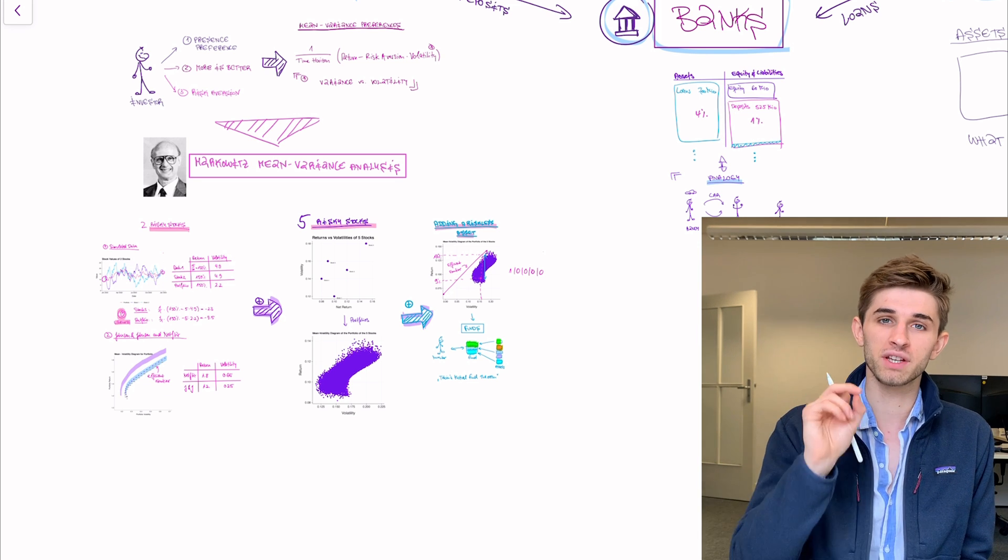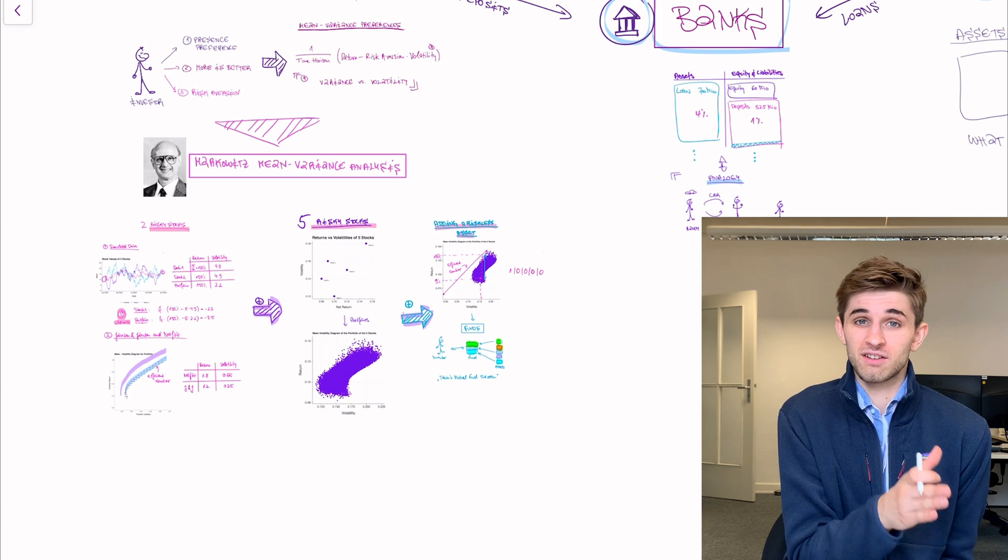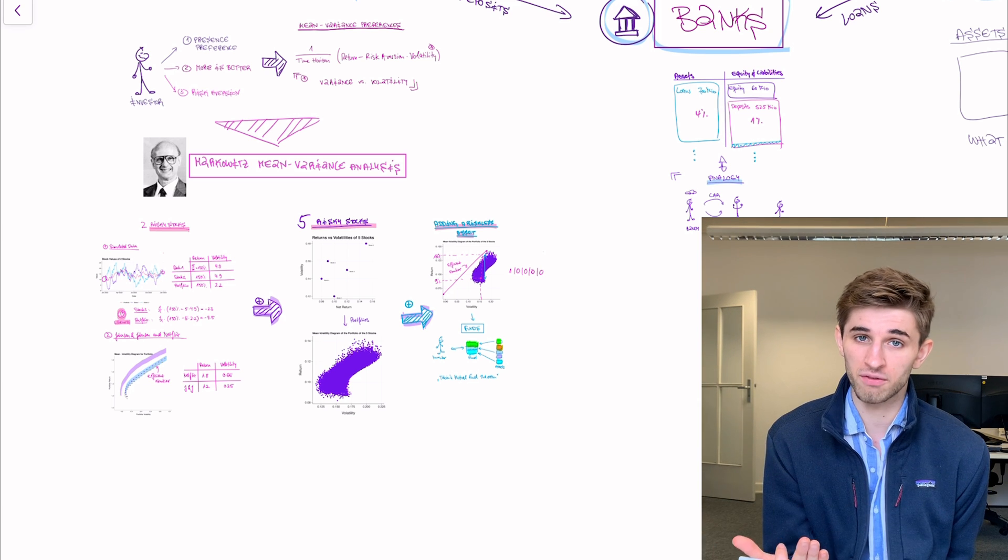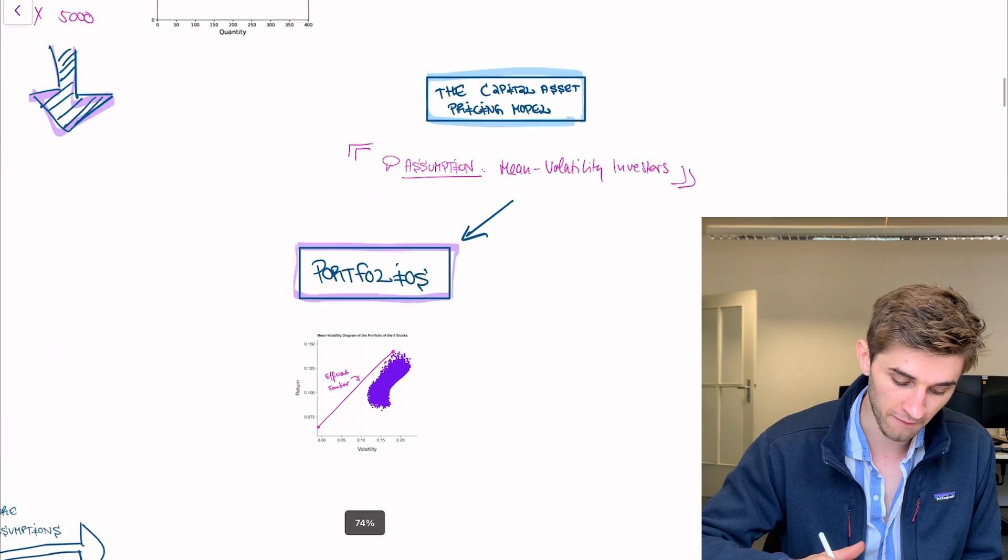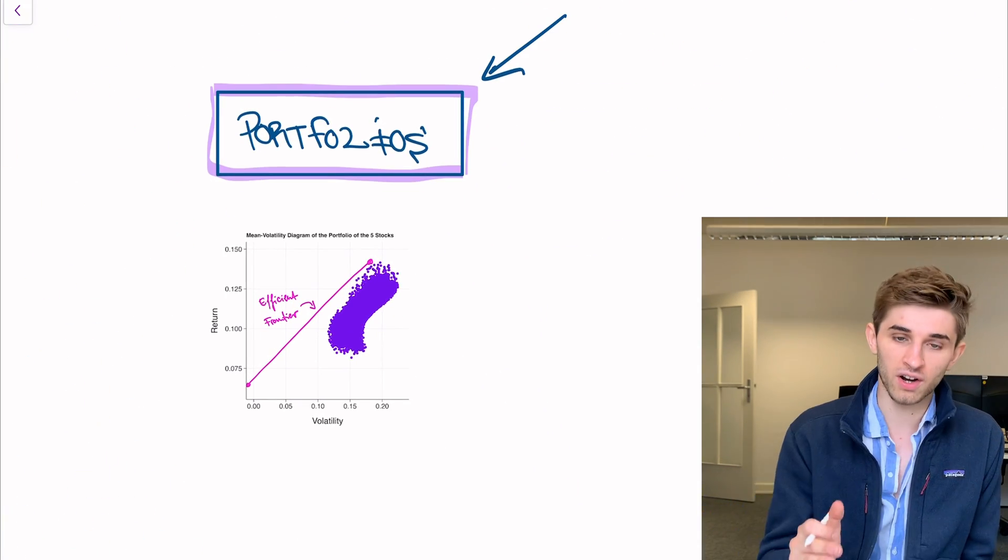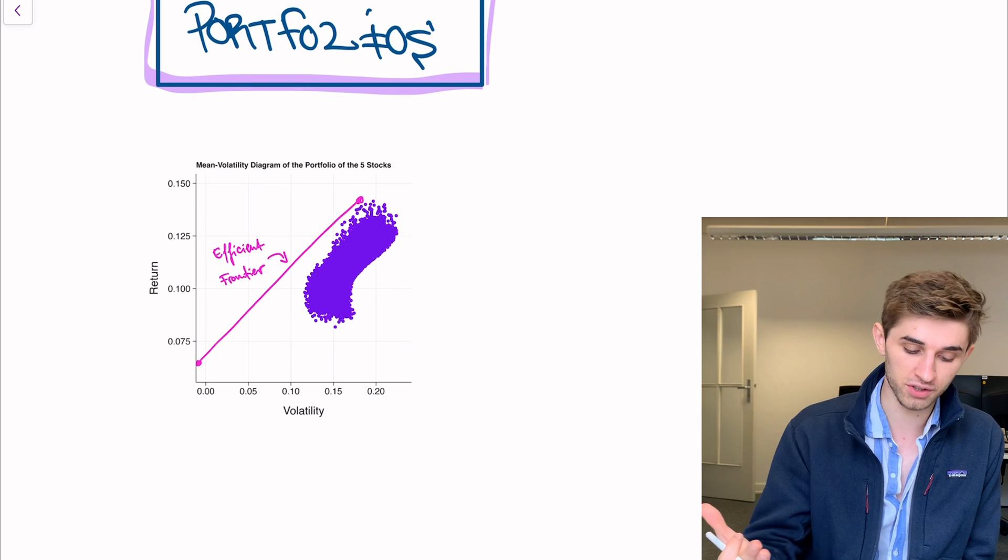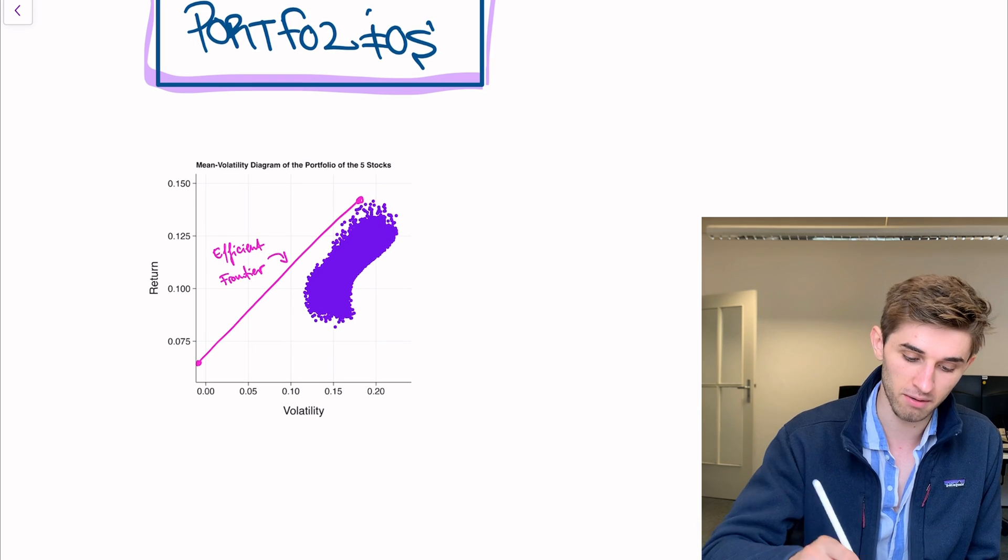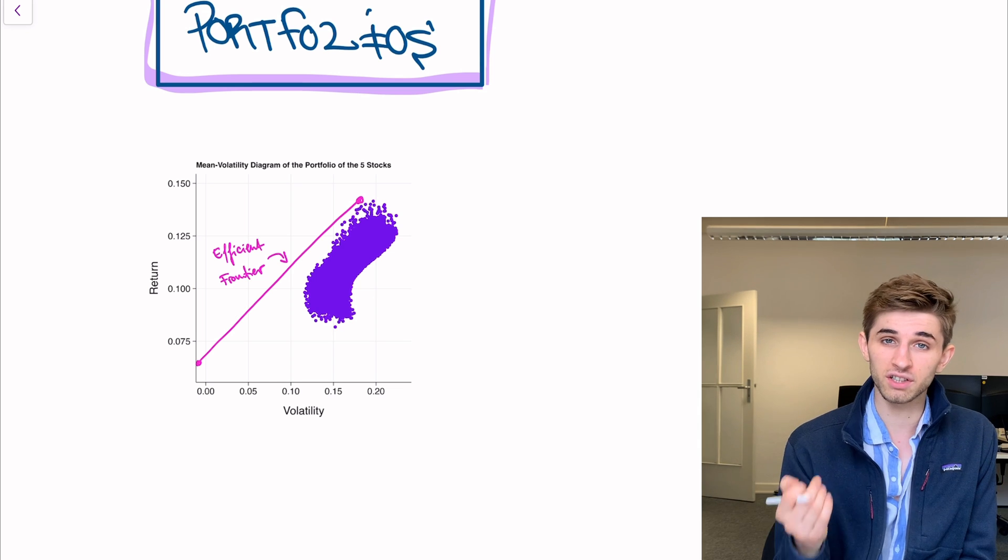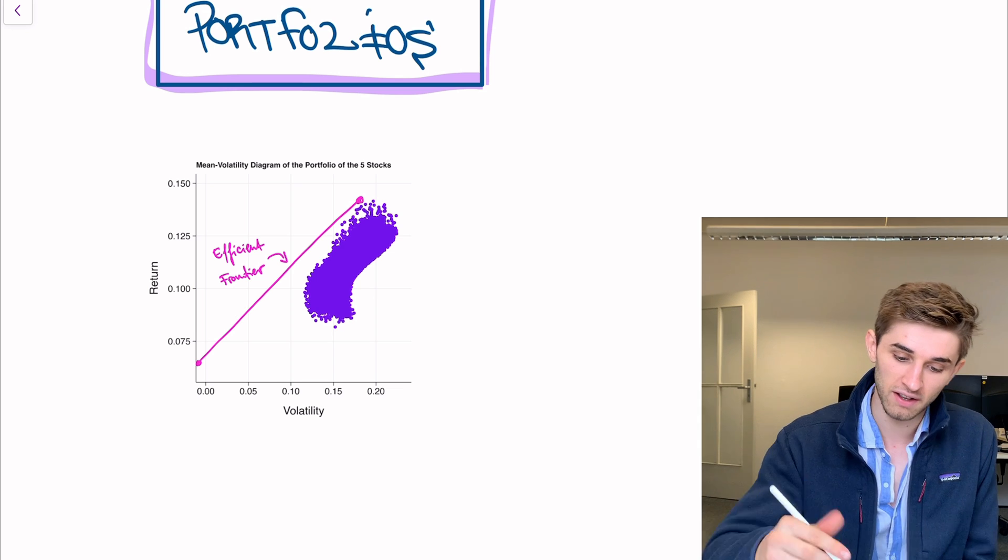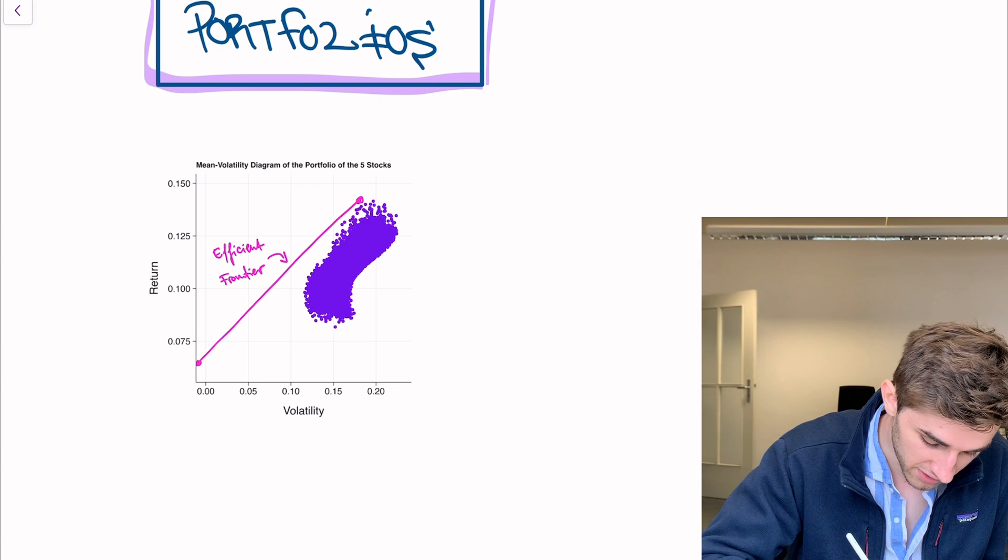What we did there is we assumed that an investor only likes the return and volatility of his or her overall position. And we concluded with this central graph that I have here again. This central graph is we have a portfolio of stocks and we have a riskless bond. And every purple dot, that's the mean volatility of a portfolio of stocks.